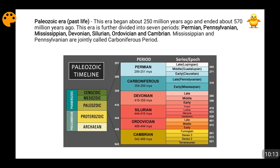The Permian Period lies from 251 million years ago to 299 million years ago. Then Carboniferous, from 299 to 359 million years ago. Then Devonian, from 359 to 416 million years ago. Then Silurian, from 416 to 444 million years ago. Then Ordovician, from 444 to 488 million years ago. And then Cambrian, from 488 to 542 million years ago.